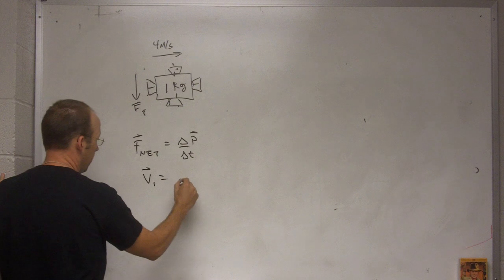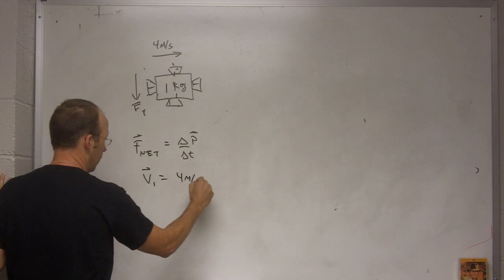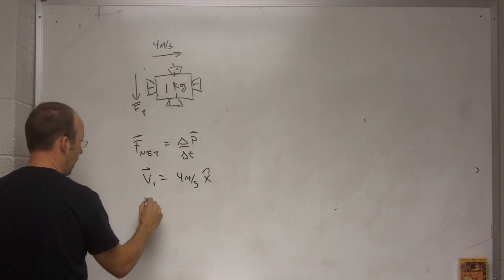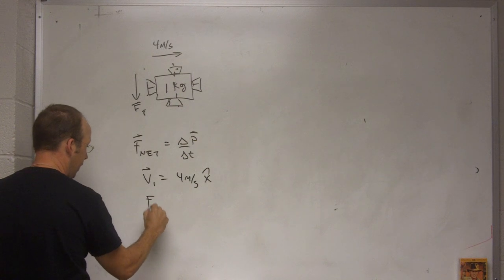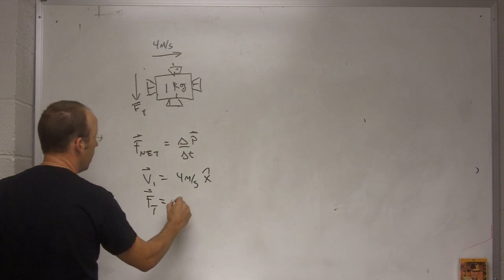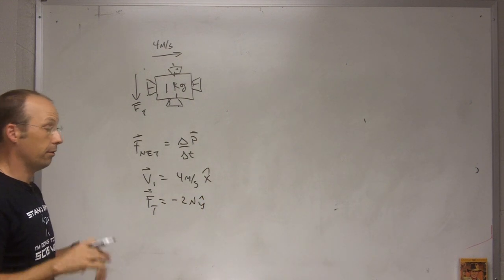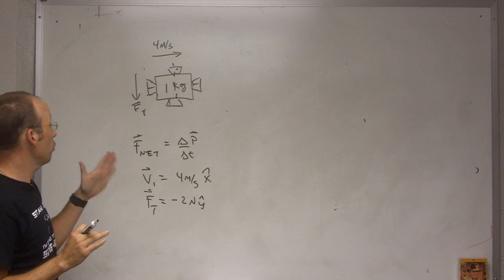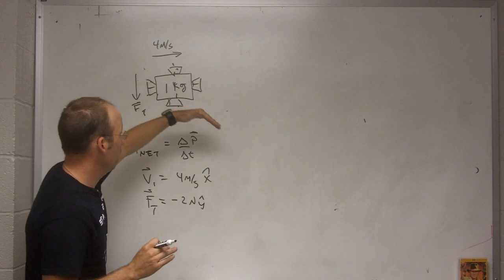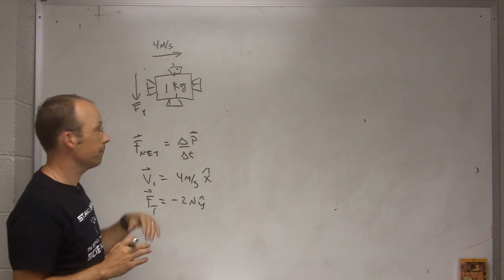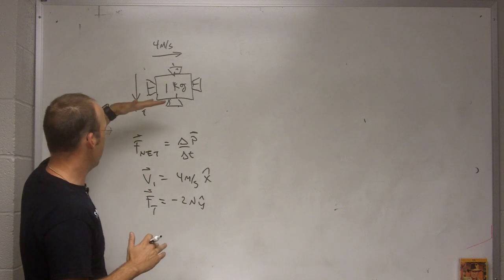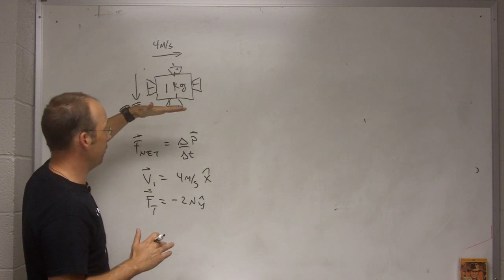V1 is going to be 4 meters per second x hat. And F net is just going to be Ft. And it's going to be negative, I said it was 2 newtons, 2 newtons y hat. Okay, so now they're in different directions. You can imagine what's going to happen. It's going to start curving down this way. And I'm going to assume it doesn't tilt so it stays in the same orientation.